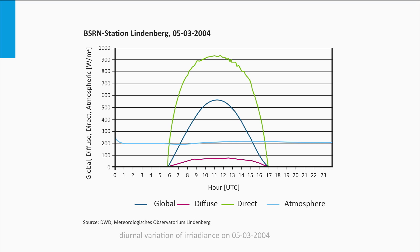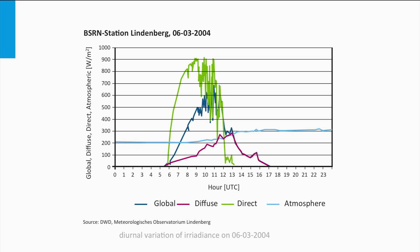A typical clear day data set would look like this: direct light in green is dominant over the diffuse light in red. In the next example, the morning was clear until 9 am when some clouds passed overhead — the direct radiation decreased intermittently and the diffuse component increased. By 1 pm the clouds completely eclipsed the sun and all radiation was diffused: the green line is nearly zero and the blue line and the red line coincide.